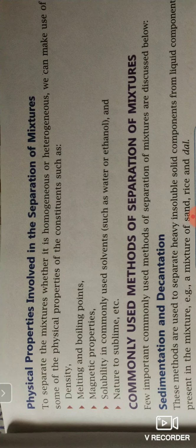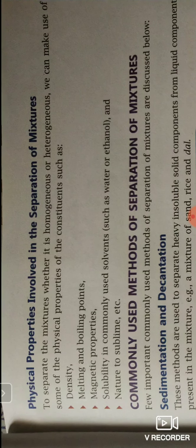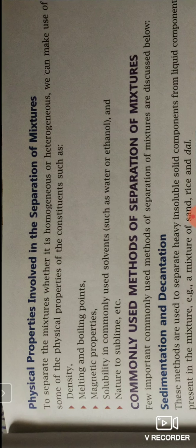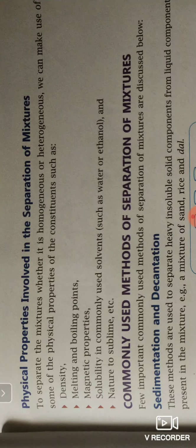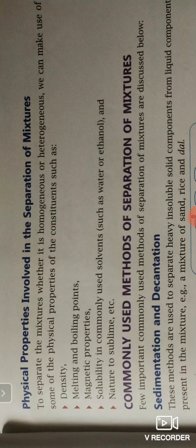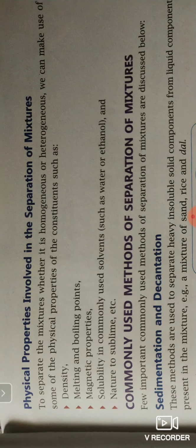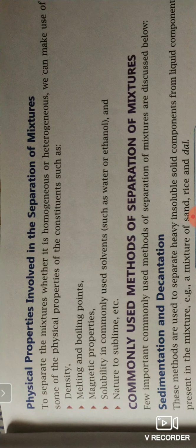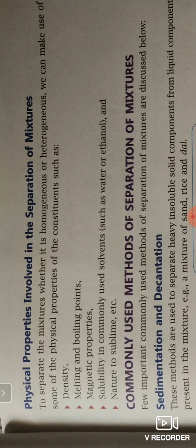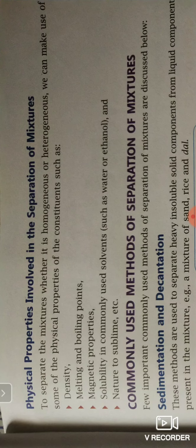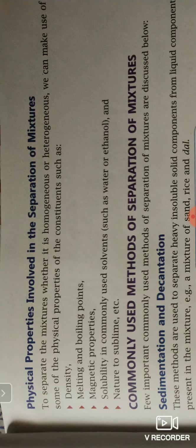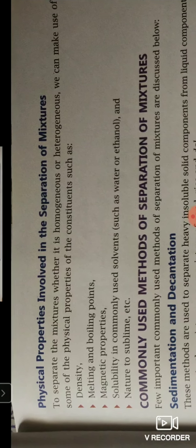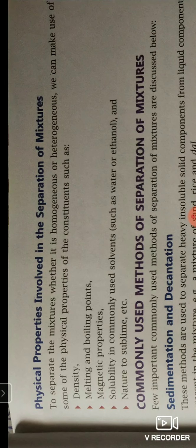Today I'm going to teach you how different mixtures can be separated from each other. Whether the mixture is homogeneous or heterogeneous — a mixture with uniform composition throughout is called a homogeneous mixture, like milk and air. Heterogeneous mixtures have separate components not uniform throughout, like oil and water. When you mix oil and water, you can see oil at the top and water at the bottom.